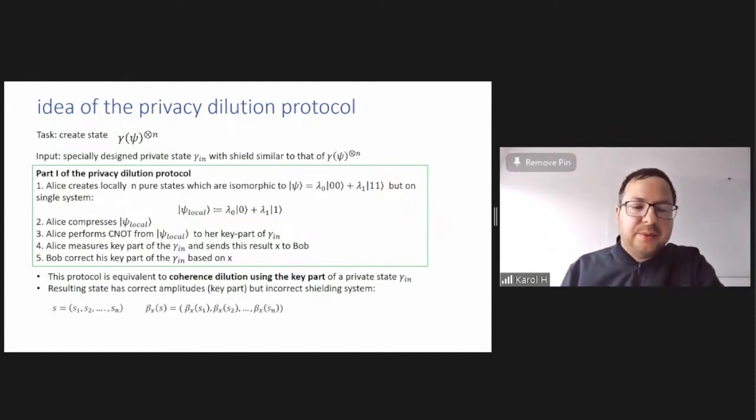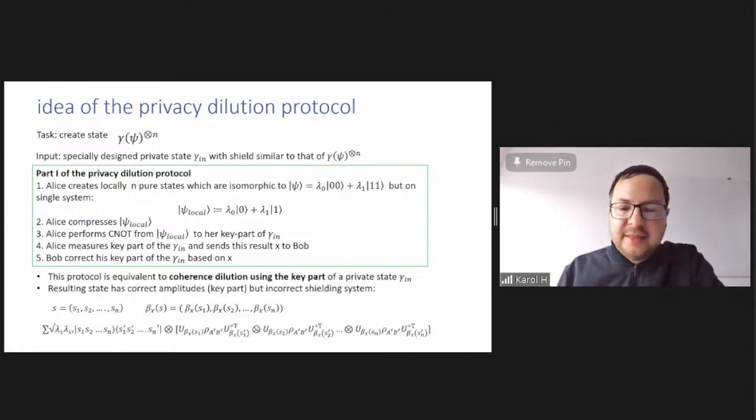I will not tell more about that. It's just something like coherent dilution using the key part of a private state. And what is the result of it? Namely, the amplitudes, if you consider binary sequences S1, S2, S to be S, and the beta X is a function of S, and the outcome key that Alice tells to Bob, then the state is. Can you see my screen? Yes? And yeah, you're already one minute over.